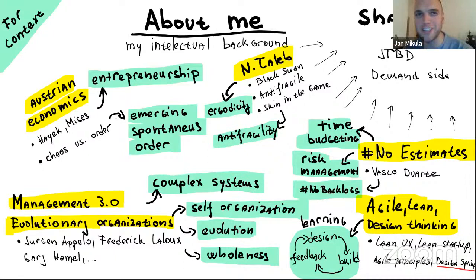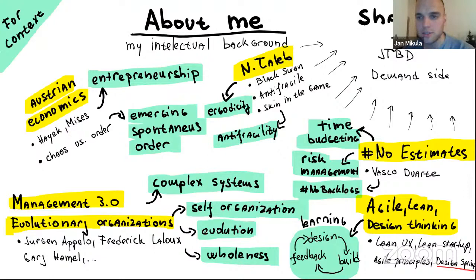I started at Salsita almost eight years ago as a UI developer, then moved to a PM position. This year I started in a role we call Director of Product, which practically means I'm helping UX designers, UI developers, and PMs to generally improve the way we build products and serve our clients better.